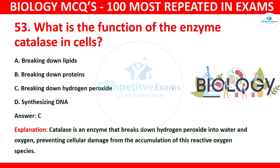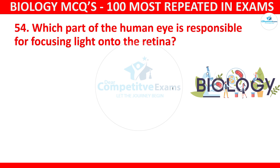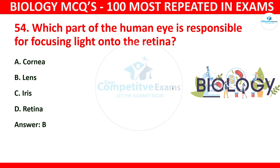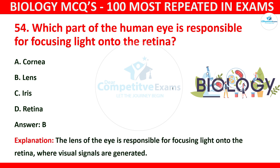Question number 54: Which part of the human eye is responsible for focusing light onto the retina? The options are cornea, lens, iris, or retina? The correct answer is B: lens. The lens of the eye is responsible for focusing light onto the retina, where visual signals are generated.